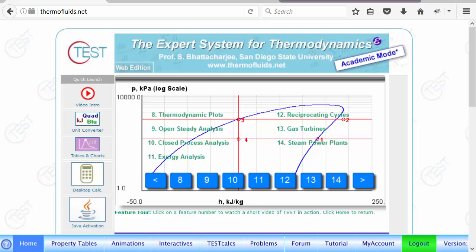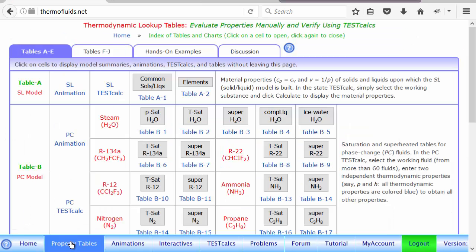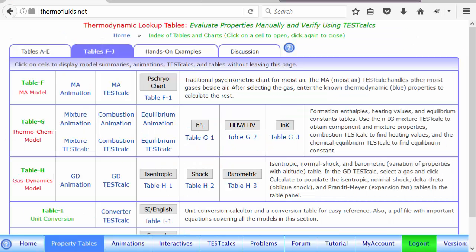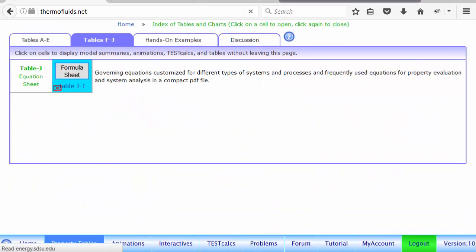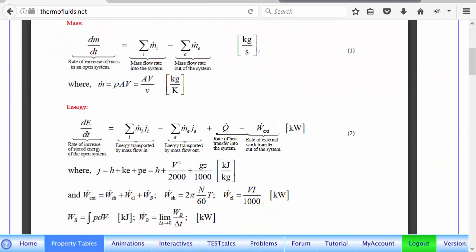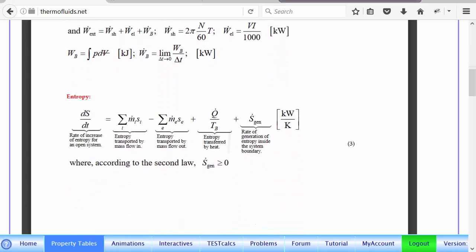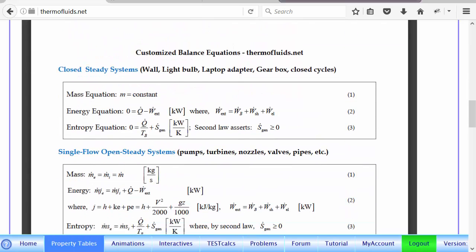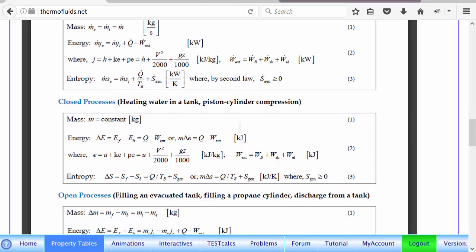So the equation for a closed process is delta s equals q over Tb plus Sgen. How do I know that? If you go to TEST website, property tables, and go to the formula sheet, which is table J, you can find governing equations.